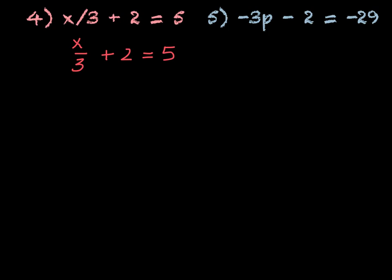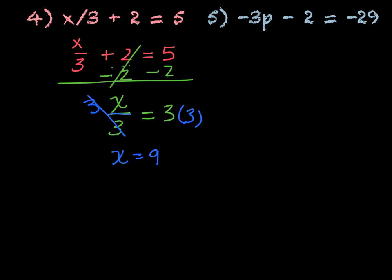The furthest thing from x on that side is the 2. To get rid of plus 2, the opposite is minus 2. Subtract 2 from both sides, leaving x over 3 equals 5 minus 2, which is 3. Next, multiply both sides by 3 because it's x divided by 3. Multiply by 3 and get x equals 3 times 3, which is 9.